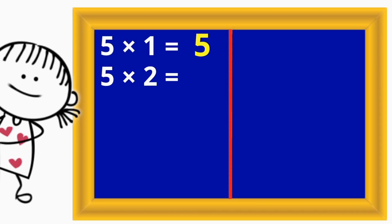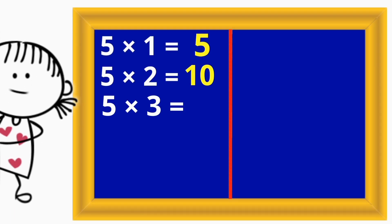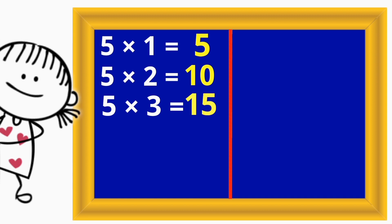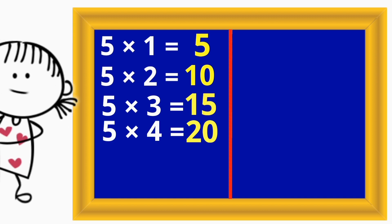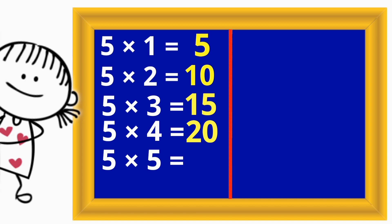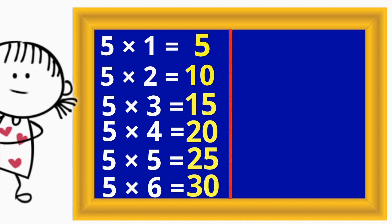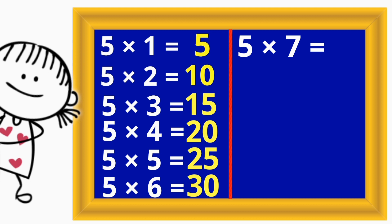5 x 2 is 10, 5 x 3 is 15, 5 x 4 is 20, 5 x 5 is 25, 5 x 6 is 30, 5 x 7 is 35.